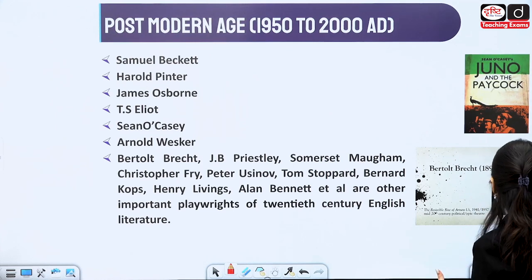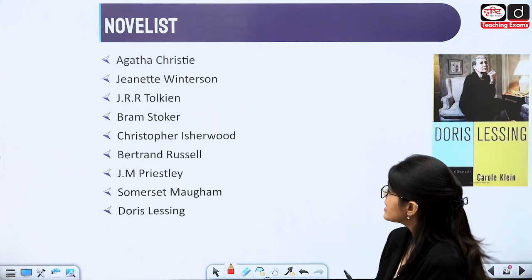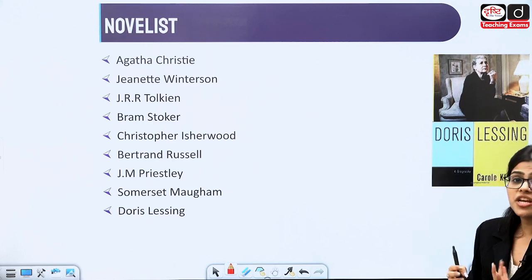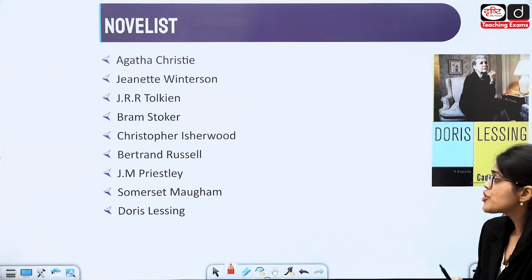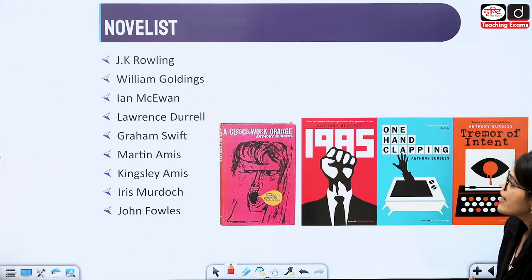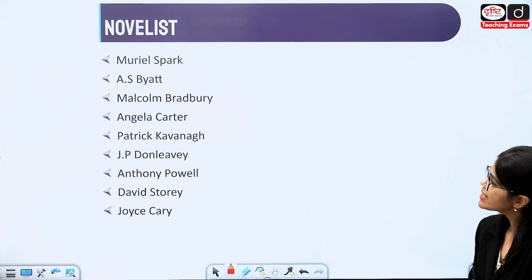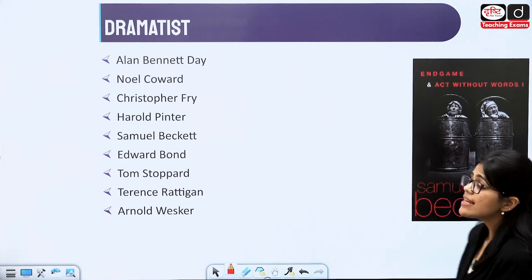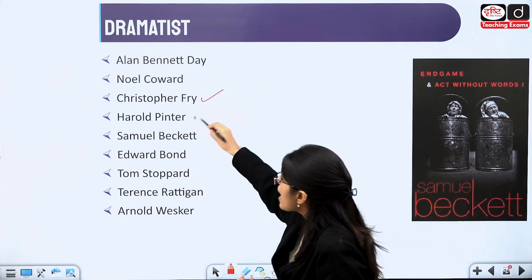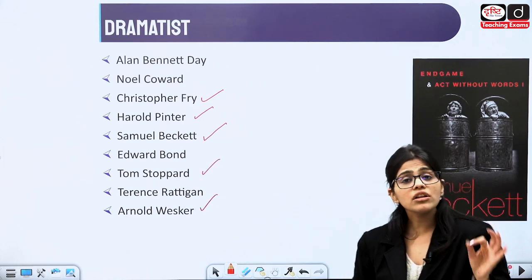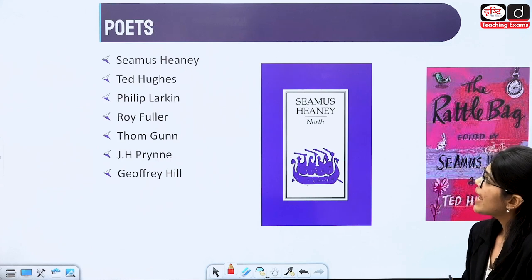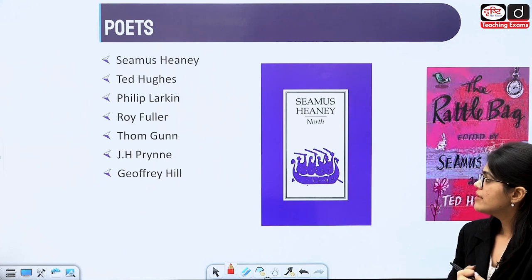We have many other novelists from this period: Agatha Christie, J.R.R. Tolkien, Bram Stoker, Christopher Isherwood, Somerset Maugham, Doris Lessing, J.K. Rowling, Martin Amis, Graham Swift, Muriel Spark, A.S. Byatt, Angela Carter, and many more. Questions are asked from Christopher Fry, Harold Pinter, Samuel Beckett, Tom Stoppard, and Arnold Wesker — all very, very important. Then we have important poets like Seamus Heaney, Ted Hughes, Philip Larkin, Thom Gunn, and Geoffrey Hill.